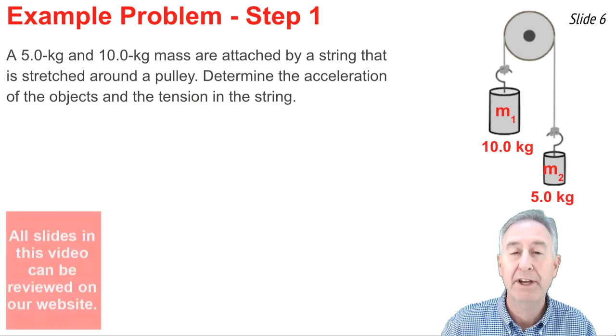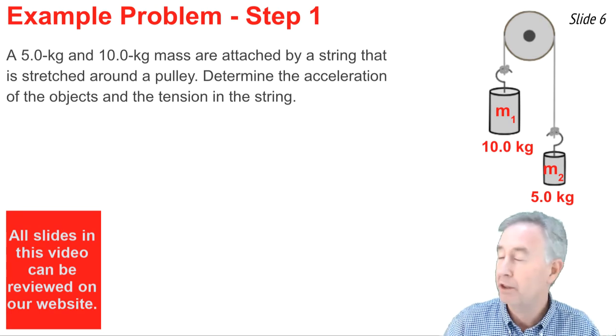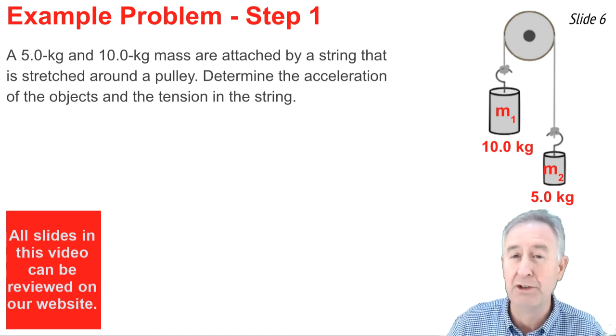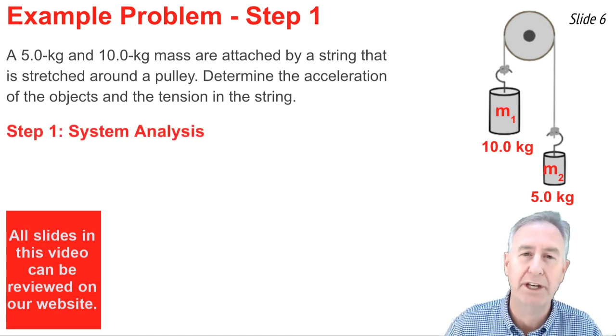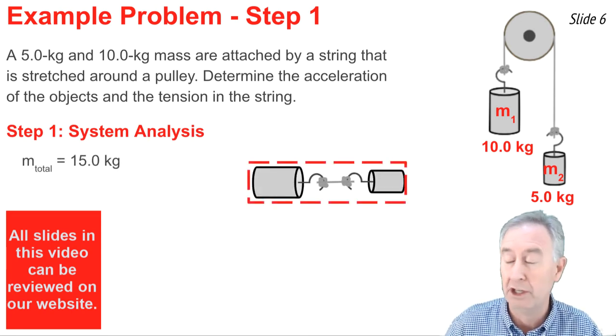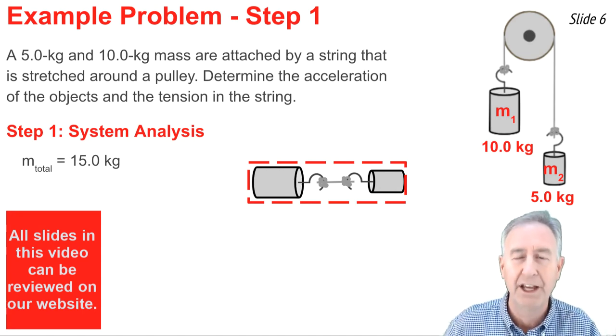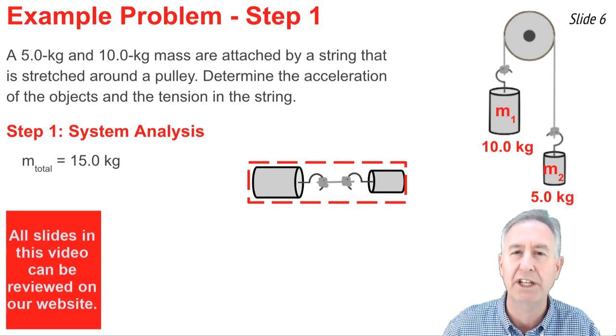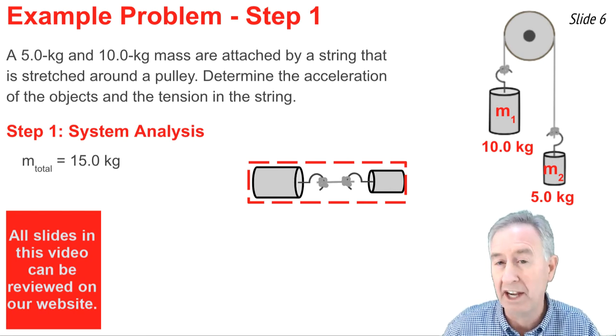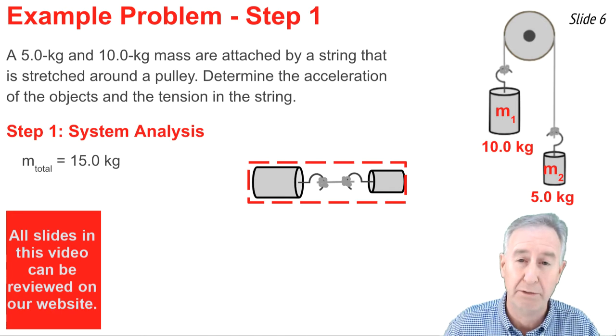In our example problem, a 5.0 kg and a 10.0 kg object are attached by a string that's stretched around a pulley. We wish to determine the acceleration and the tension in the string. So we begin with a system analysis in order to determine the acceleration of these objects. In the system analysis, we pretend that these two masses are simply one and moving and accelerating together. The total mass of the system is 15.0 kg. The string is inside of the system and, as such, does not need to be regarded when we draw the free body diagram.